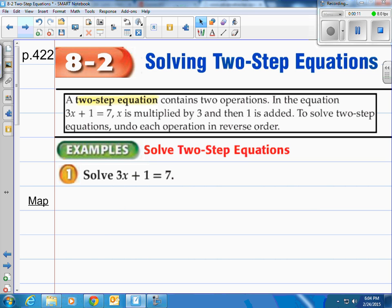We have worked with one-step equations, now we're moving into two steps. A two-step equation contains two operations. In the equation 3x plus 1 equals 7, for example, x is being multiplied by 3, and then 1 is added. To solve two-step equations, all you have to do is undo each operation in reverse order.